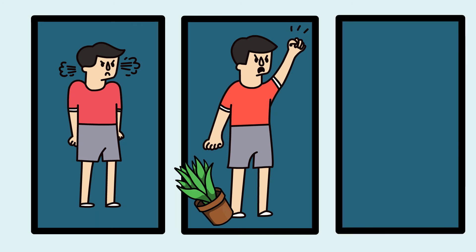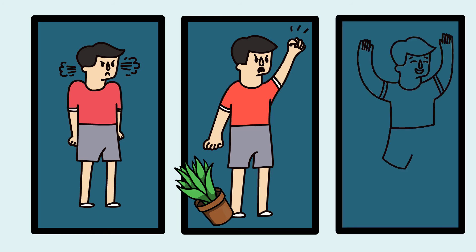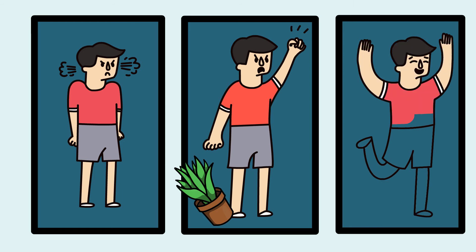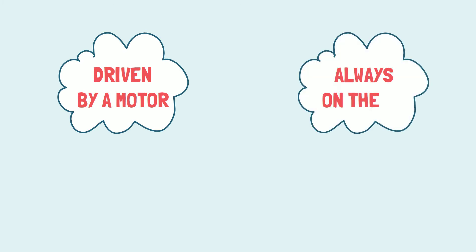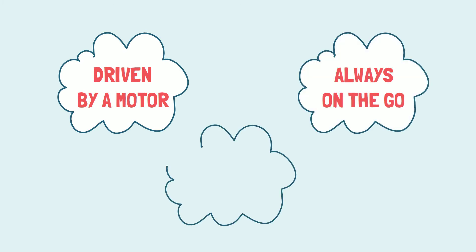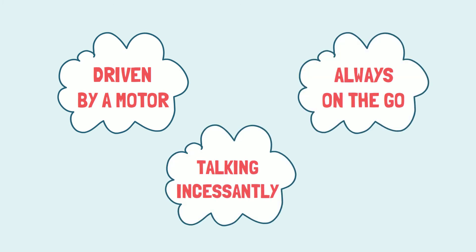Hyperactivity also takes many forms. Children with ADHD are in constant motion. Sitting still through a lesson is impossible for them. A child may fidget, squirm, climb and run around the room aimlessly. Parents and teachers describe them as driven by a motor, always on the go and always talking incessantly.